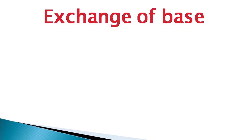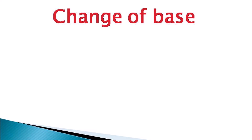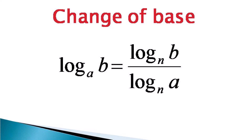From the chain rule we get the exchange of base formula, which states that log of b to the base a can be written as 1 divided by log of a to the base b — taking the reciprocal exchanges the base and the number in the log. Similarly, the change of base formula states that log of b to the base a equals log of b to the base n divided by log of a to the base n, where n is a newly inserted base.